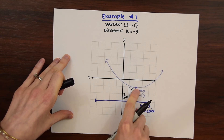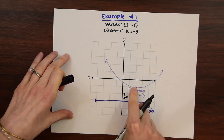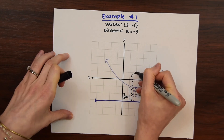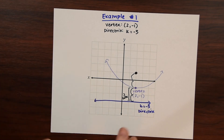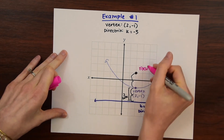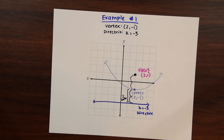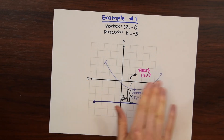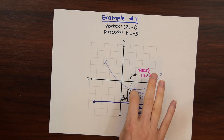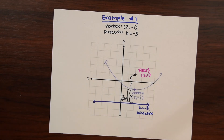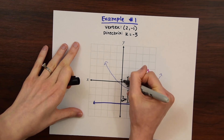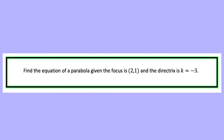The distance between the vertex and the directrix is two units. That means the focus is two units on the opposite side, inside the parabola. Counting one, two units up from the vertex, our focus is at (2, 1). We just sketch it out, think about the shape of the parabola, and count the units opposite the vertex-to-directrix distance on the other side.